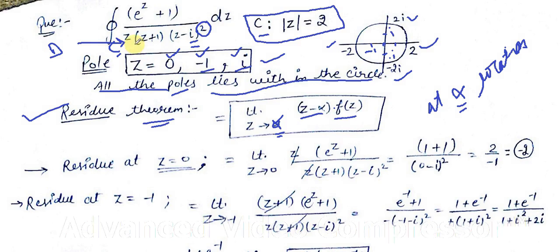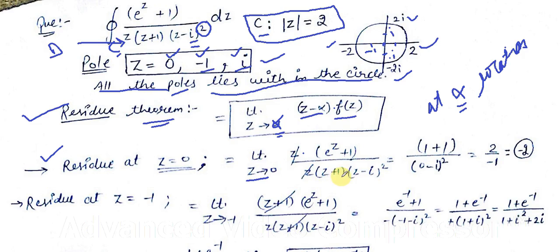For the residue at z = 0: we compute the limit as z → 0 of z multiplied by the full function e^(z+1) / [z·(z+1)·(z−i)²]. The z in the numerator cancels with the z in the denominator. Substituting z = 0 into the remaining function gives us the residue at z = 0 equal to −2.